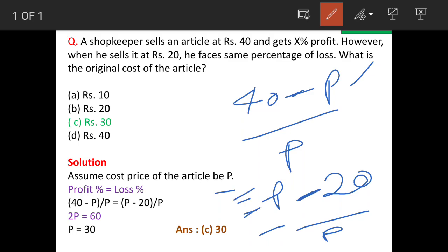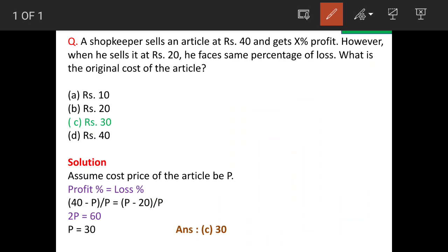So since both are equal, we equate these two, and when we equate these two we'll get this equation. And when you simplify this, you'll get value P as 30. That means price of article is 30, and hence option C is the answer.